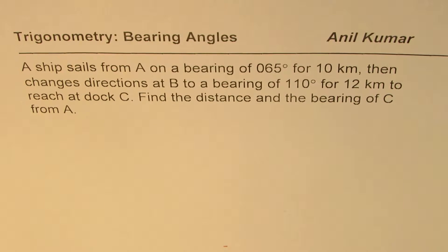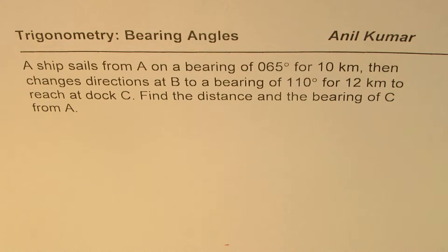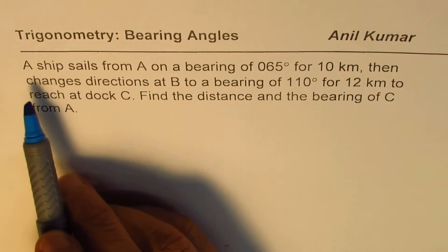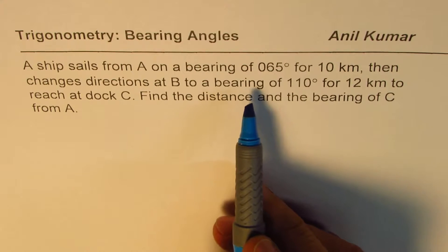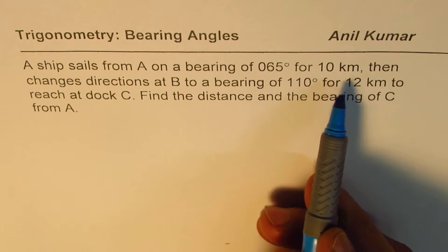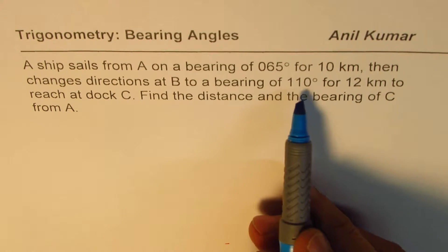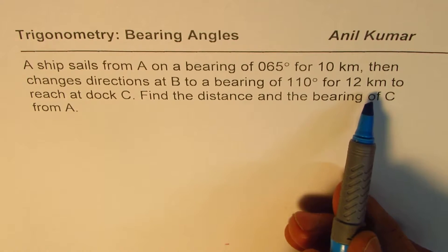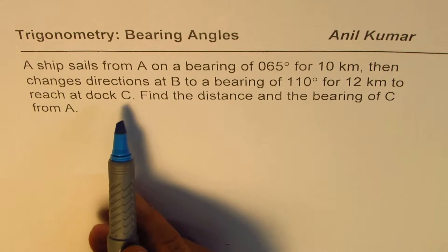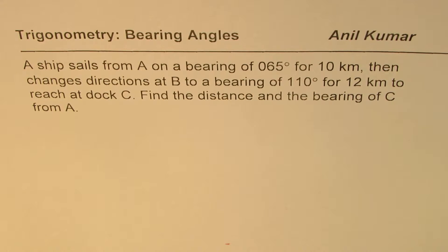I'm Anil Kumar and in this video we will review the concepts learned in trigonometry about bearing angles, sine law and cosine law. The question here is: a ship sails from A on a bearing of 065 degrees for 10 kilometers then changes direction at B to a bearing of 110 degrees for 12 kilometers to reach at dock C. Find the distance and the bearing of C from A.